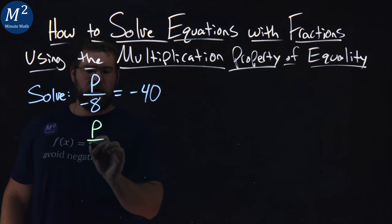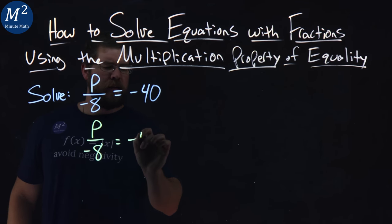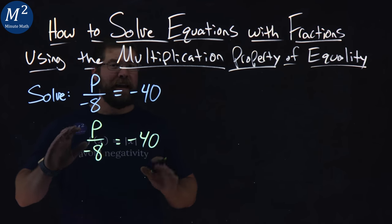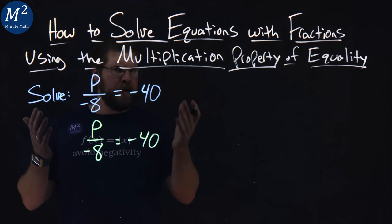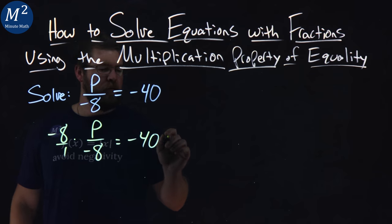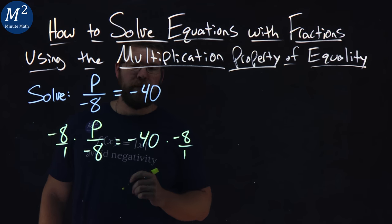So I'm going to rewrite this: P over negative 8 equals negative 40. Well, to get negative 8 out of the left-hand side equation, getting P by itself, if I multiply negative 8 in the numerator of a fraction, I have to do it to both sides—negative 8 over 1 if you want.